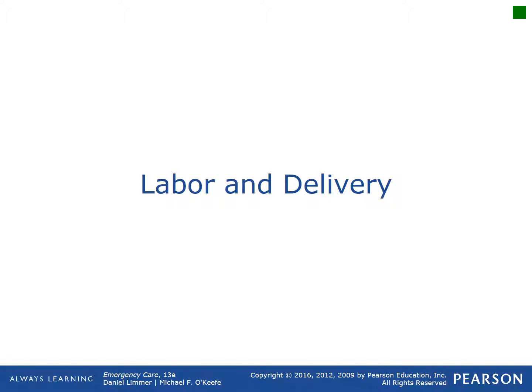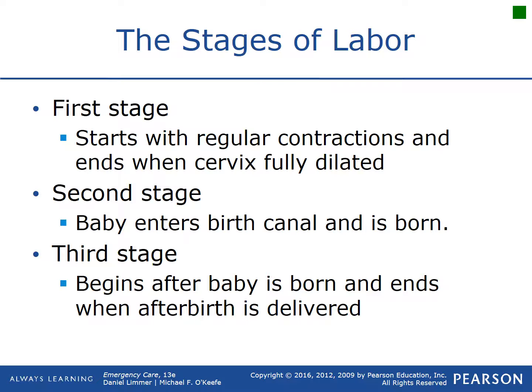The first stage of labor begins when the patient feels regular contractions and the cervix is fully dilated — the muscular ring is open, nothing holds the baby back. The second stage begins when that baby enters the birth canal and ends when the baby is born. The third stage is when labor ends — after the afterbirth, meaning the placenta and remaining umbilical cord, is delivered from the uterus.